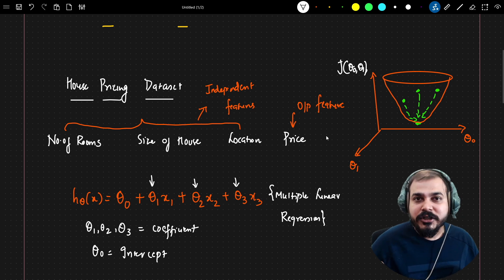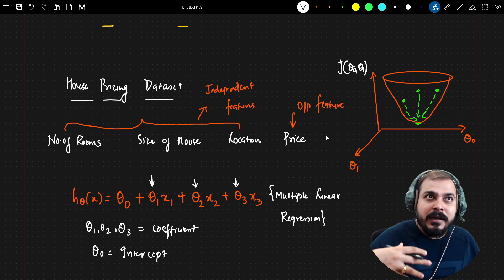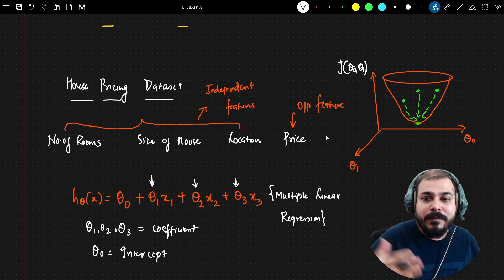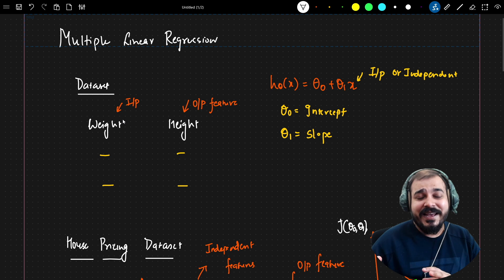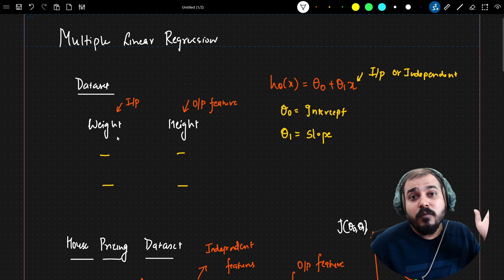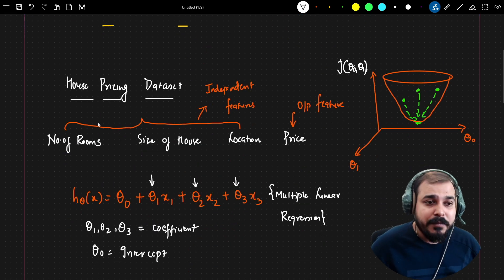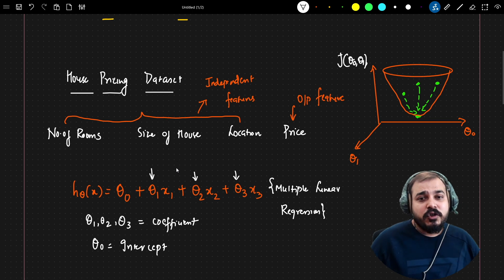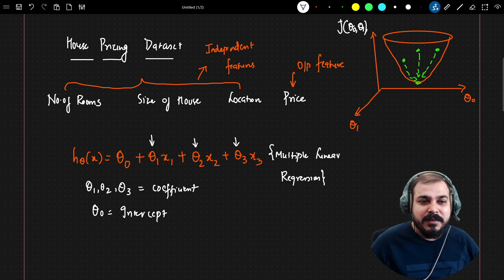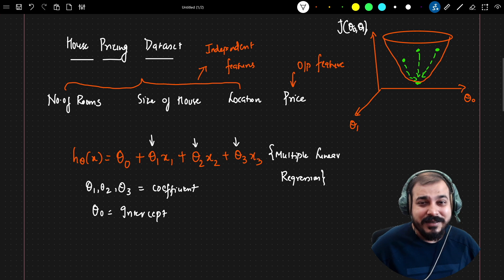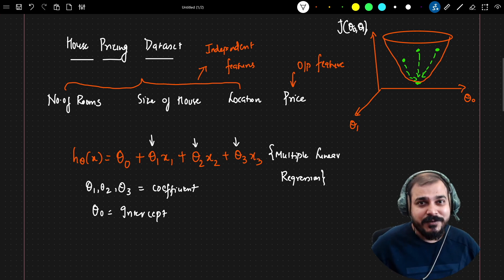So that is what multiple linear regression is all about. If we have just one input feature it is simple linear regression; if we have more than one input feature it is multiple linear regression. In upcoming videos we will also cover some important assumptions about linear regression. Let's move on to the next video.